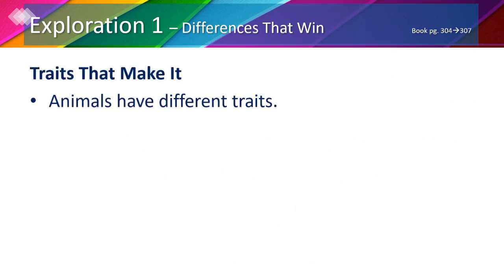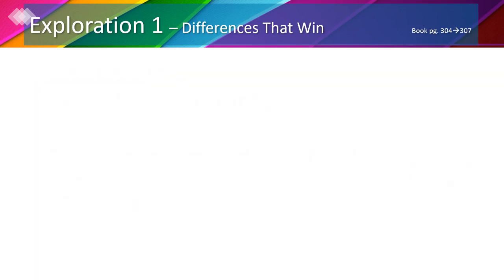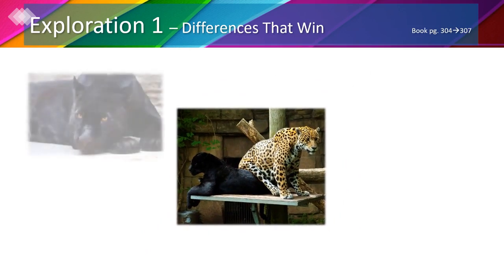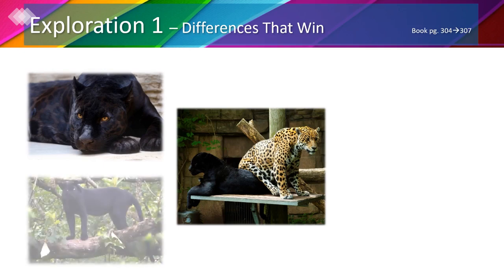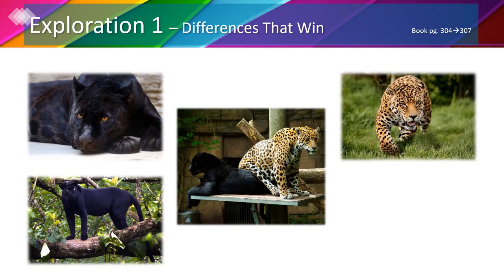Animals have different traits — traits such as color, size, and body parts make animals look different, but these traits may also affect survival. These two animals are both jaguars but have different characteristics. All jaguars have spots on their skin, but they're harder to spot on black jaguars. Black jaguars can be easily spotted in the grasslands, so they tend to stay in trees as they watch for their prey.